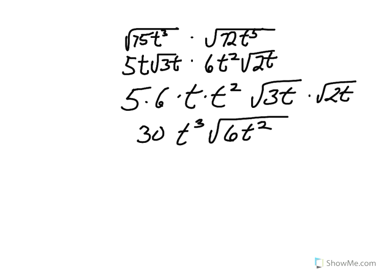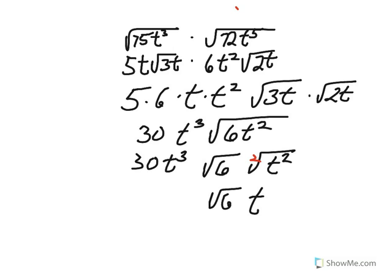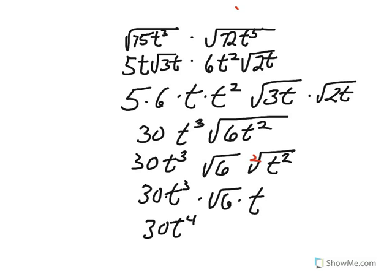We are now ready to reduce the radical that is left. We divide that radical up into the square root of 6 and the square root of t squared. Be sure to copy down what's in front of the radical so you don't lose it. The square root of 6 can't be reduced further. However, the square root of t squared has an even exponent, so we take the index of 2, divide it into the exponent of 2, and get t to the first. Using multiplication, we can rewrite this as 30t to the fourth times the square root of 6.